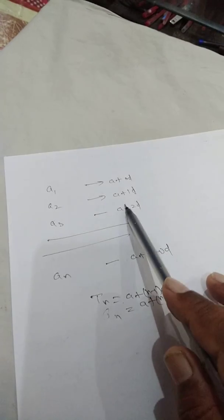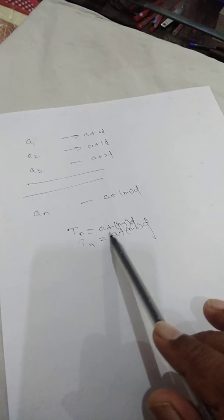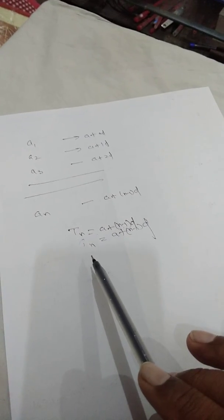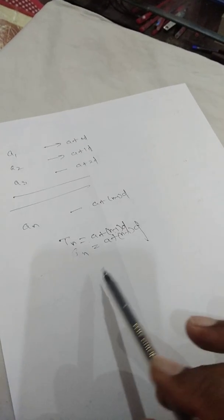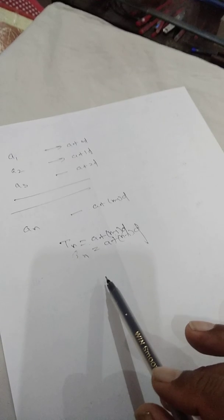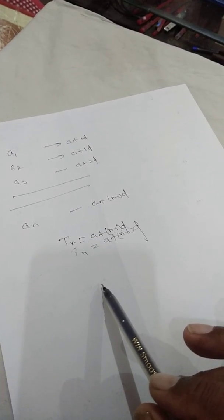Because every term index is one less than 1: a equals a plus 0d, second is a plus 1d, and in this way we can say that the nth term Tₙ equals a plus (n minus 1) into d. This is also called Tₙ or aₙ, and is also denoted by small l. Thank you.